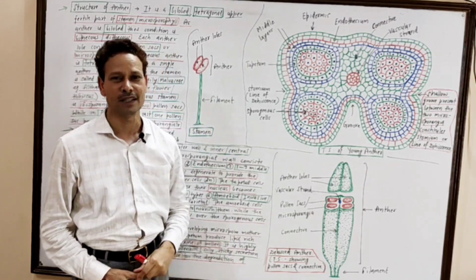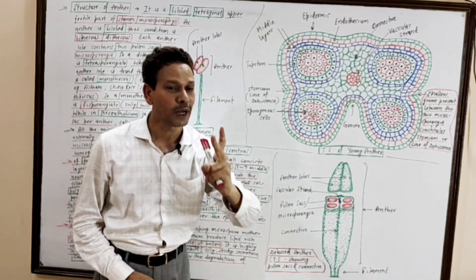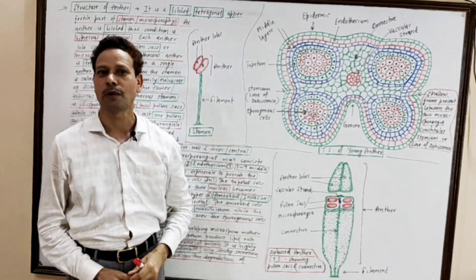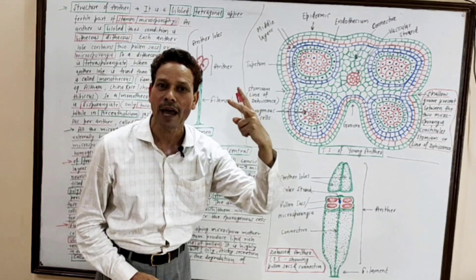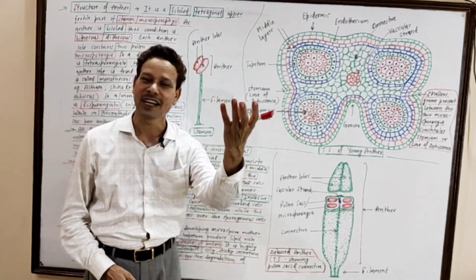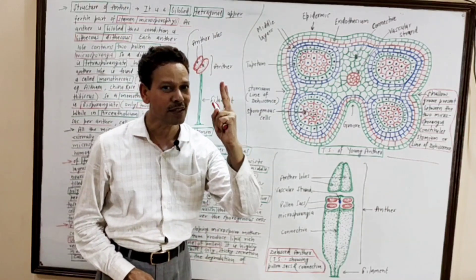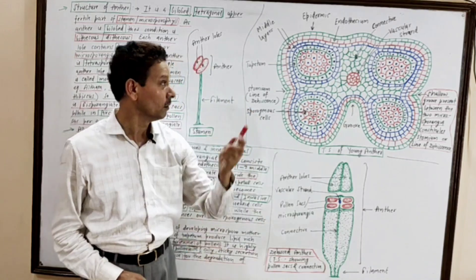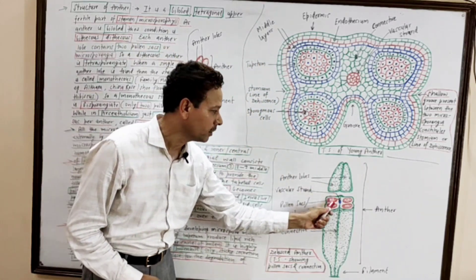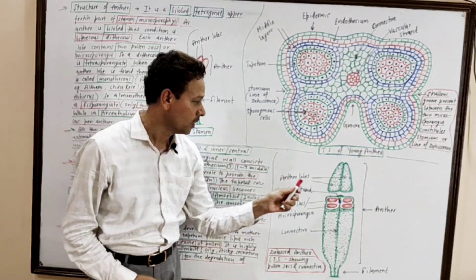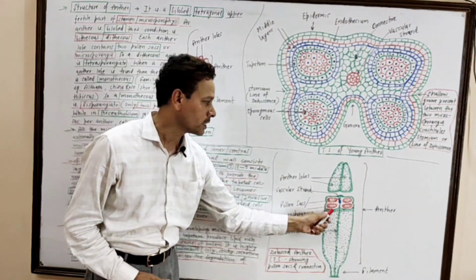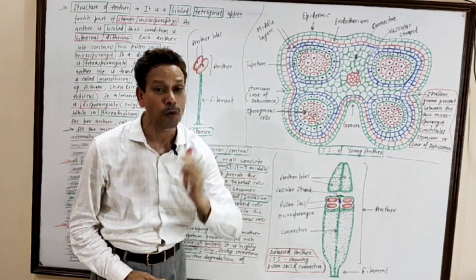Note down, competitive exam students: each anther lobe consists of two pollen chambers, pollen sacs, or microsporangia. This means in a dithecous anther having two anther lobes, there are four pollen chambers total. The condition is tetrasporangiate. So both anther lobes together have four pollen chambers or microsporangia — this is the tetrasporangiate condition.